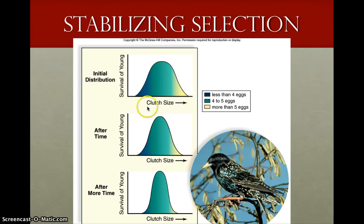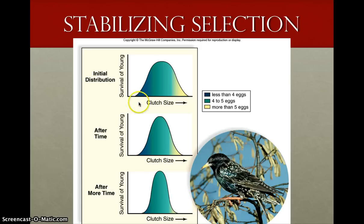This variation was important because if all birds laid four eggs or fewer and there was nothing else, there would never be any reason to change — we would be stuck at laying less than four eggs. But since some lay less than four, some lay four to five, and some lay more than five, it's possible that this change could happen. So that variation was very important.